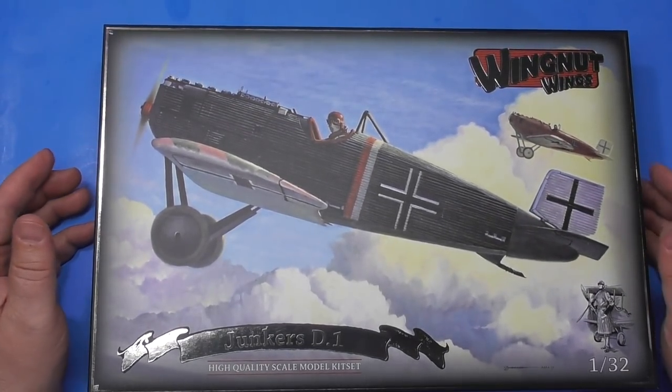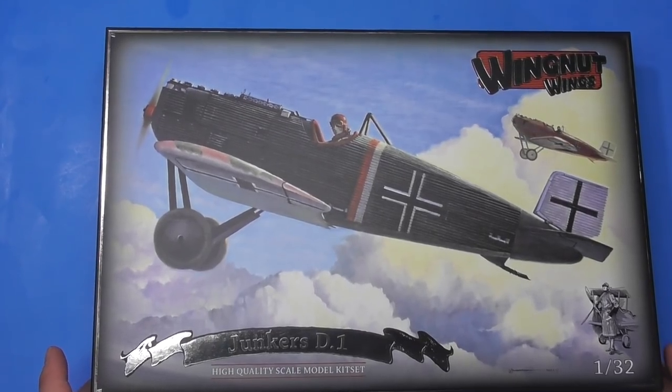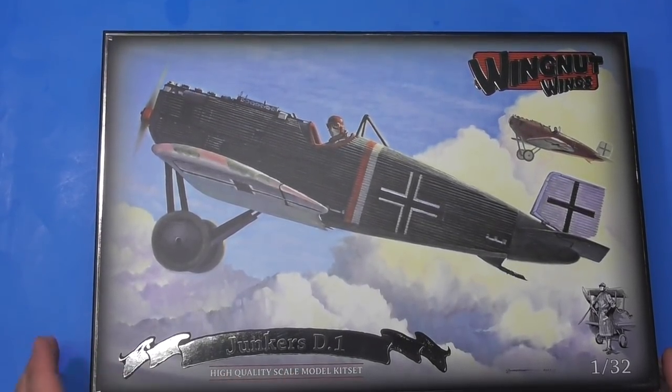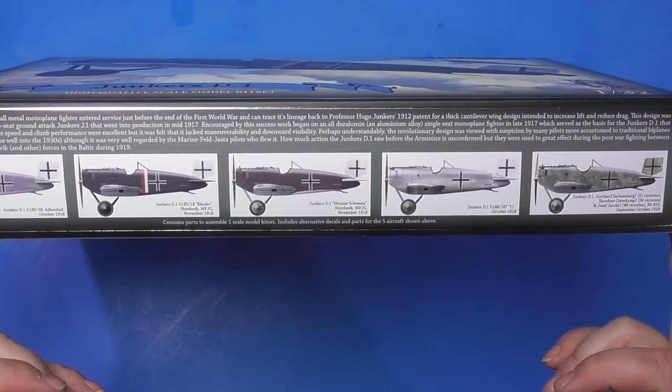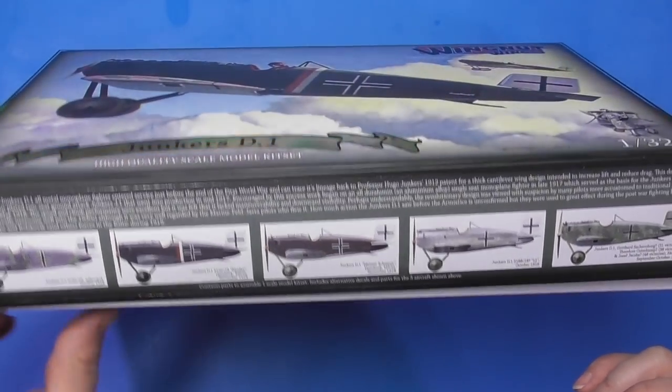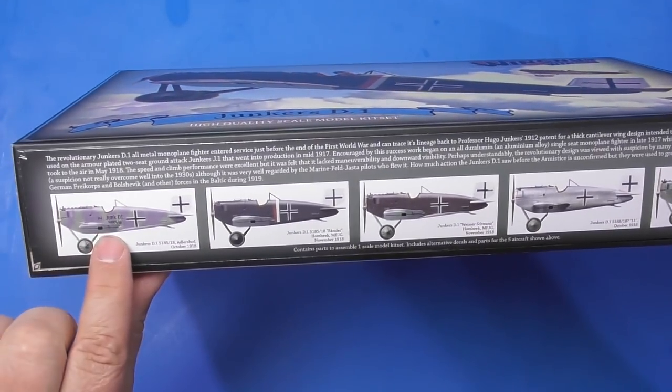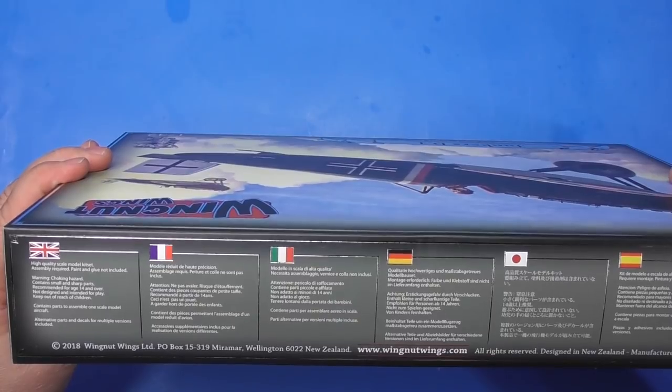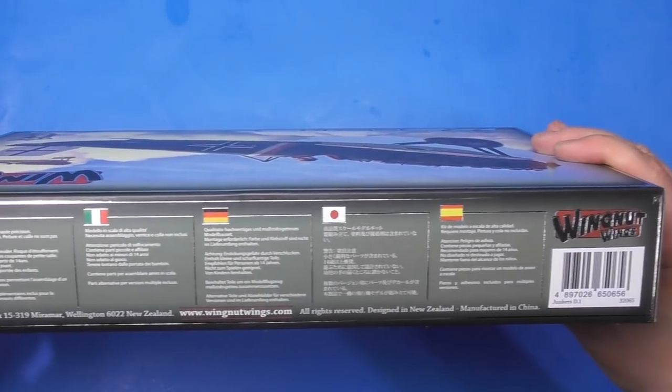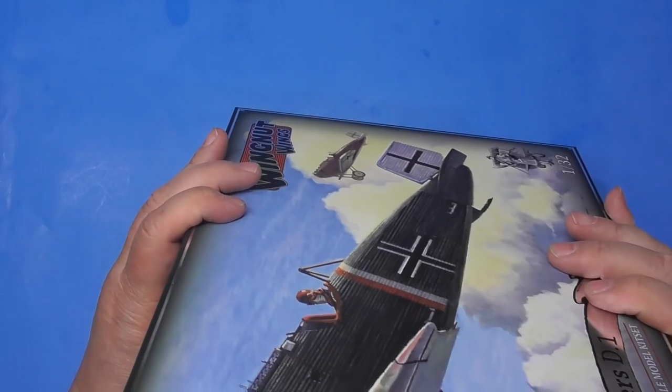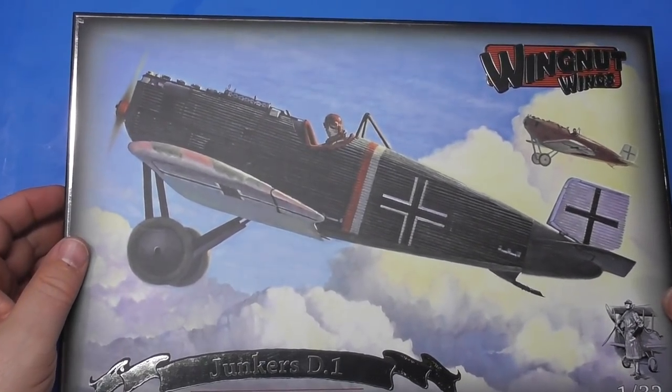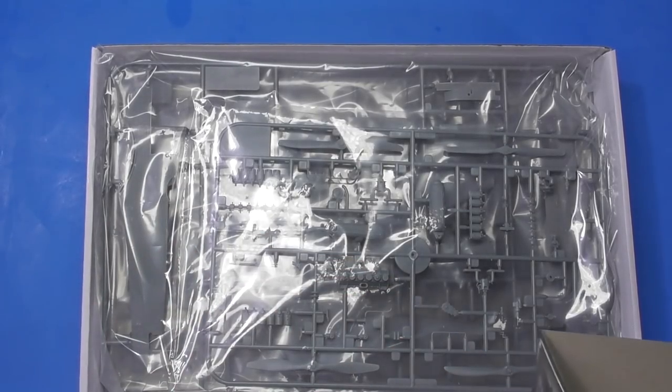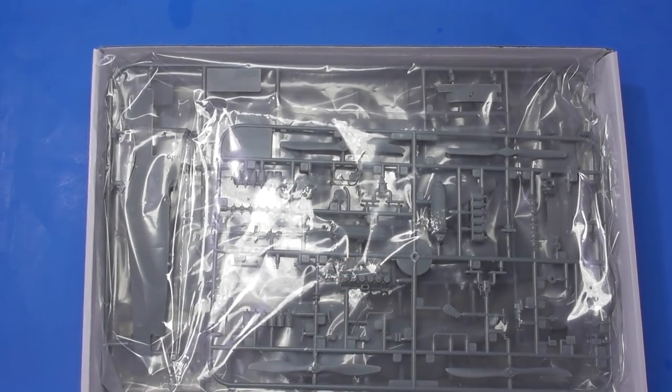Got this from Sprue Brothers for $79.99. 1/32nd scale Junkers D1. There are five schemes available. I'm liking the one with the purple. There's a little description in various languages. Beautiful box art as you would expect. Let's dig in and see what we got.